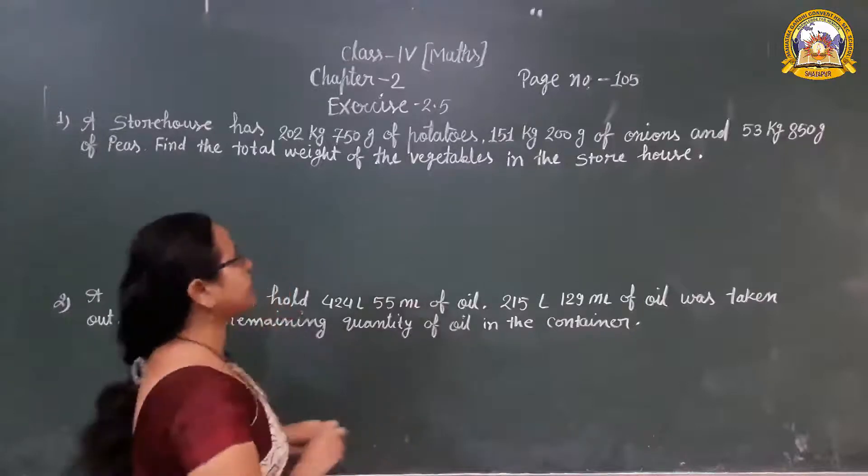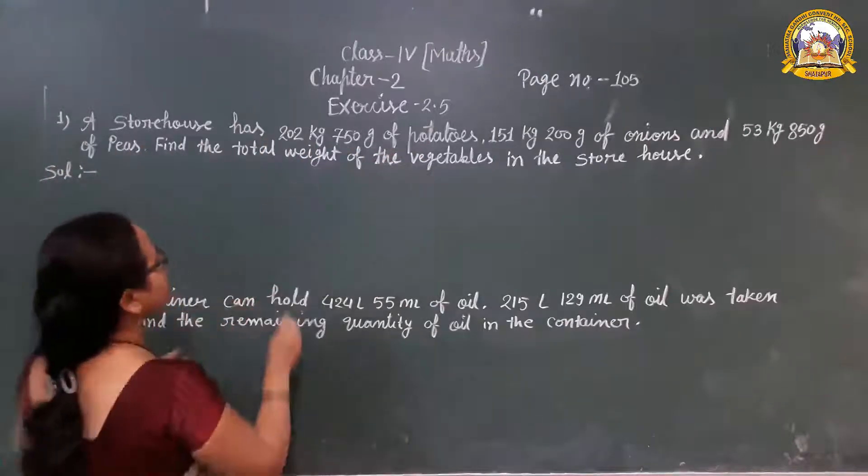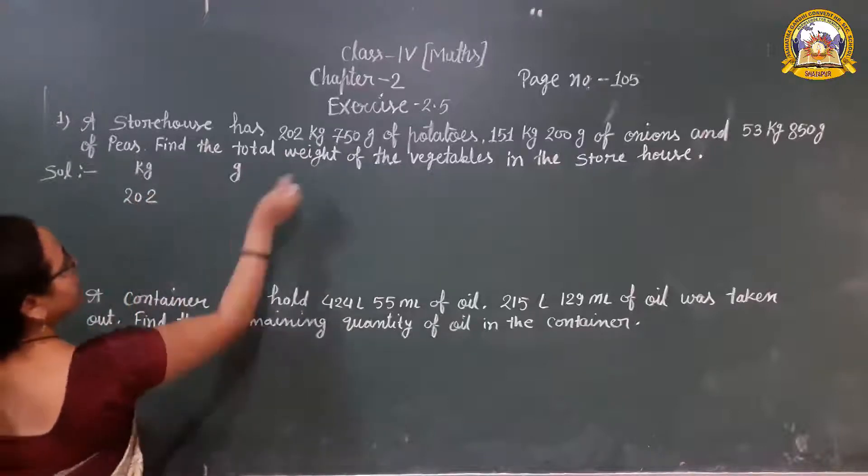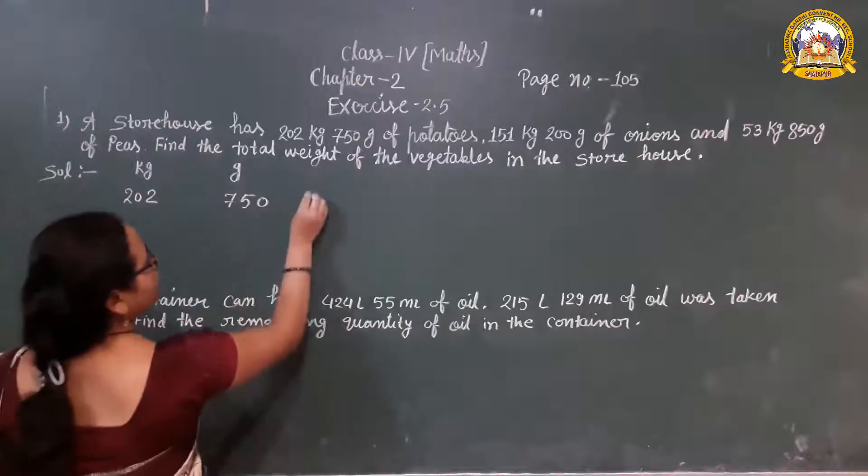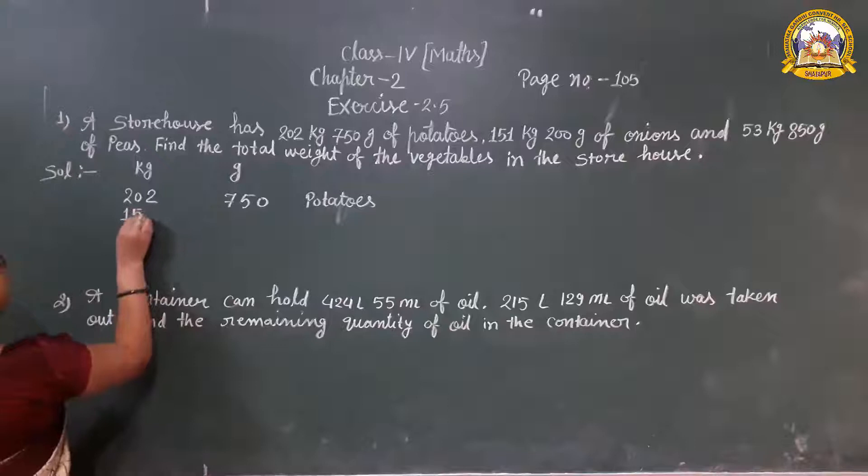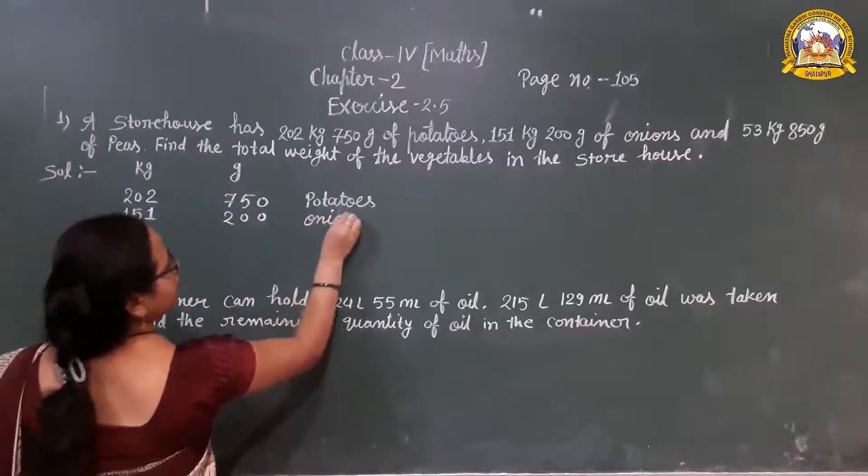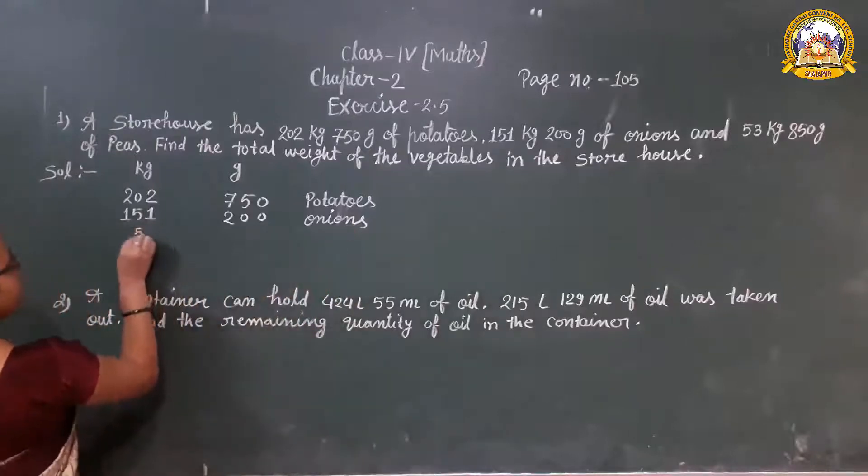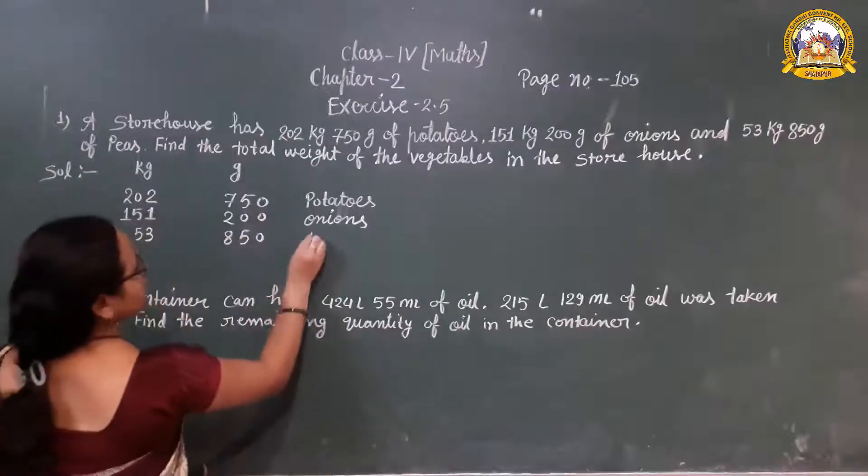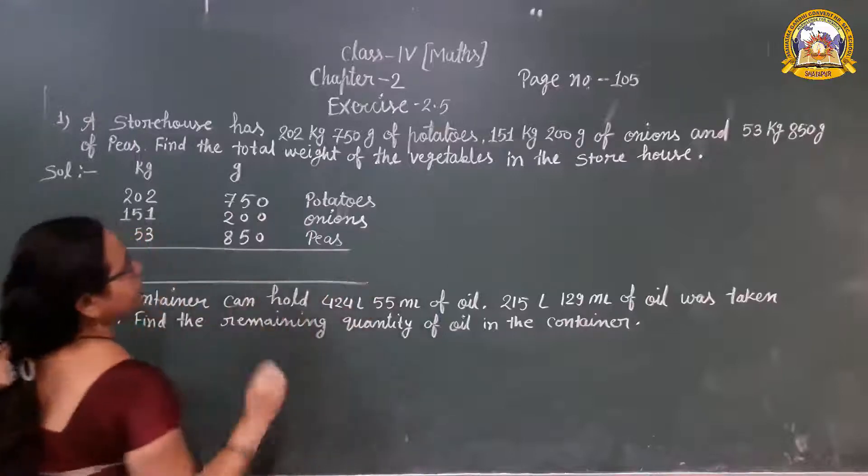Solution: A storehouse has the quantity of potatoes. First we write the unit on the top: kg and g. 202 kg 750 g of potatoes, 151 kg 200 g of onions, and 53 kg 850 g of peas. We have to find the total weight of the vegetables.